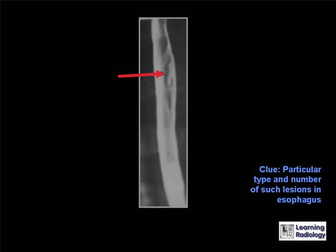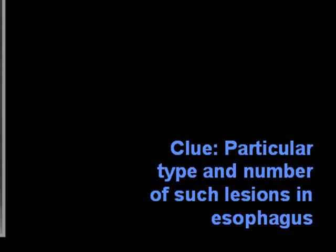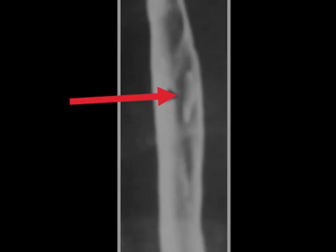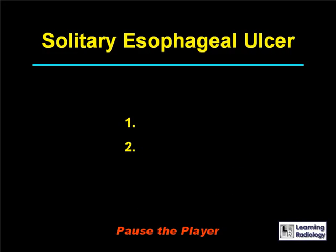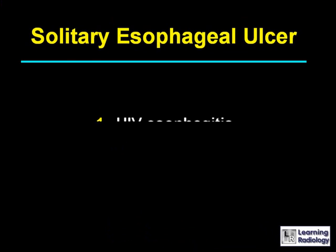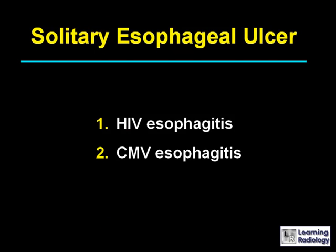The next differential is for a solitary esophageal ulcer. There are two causes: HIV esophagitis and CMV esophagitis.